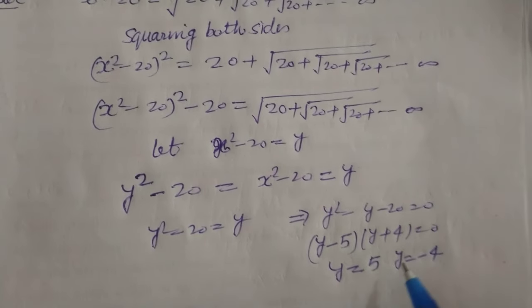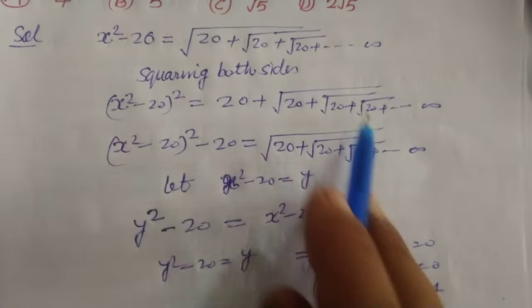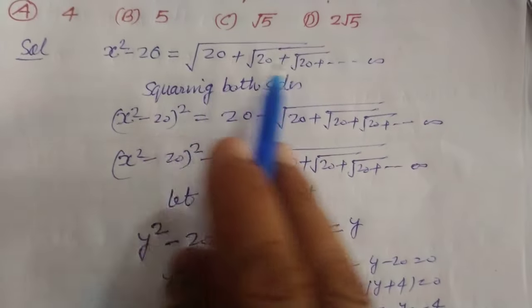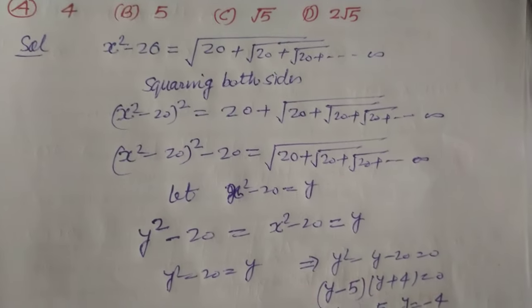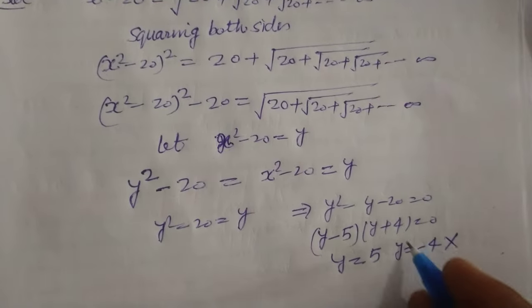Here, this is not acceptable if we put the value of Y minus 4. So, the value inside square root never come in negative. So, this is not acceptable.